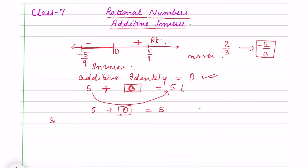For additive inverse, what number will I add here so that additive identity will come, so that 0 will come?